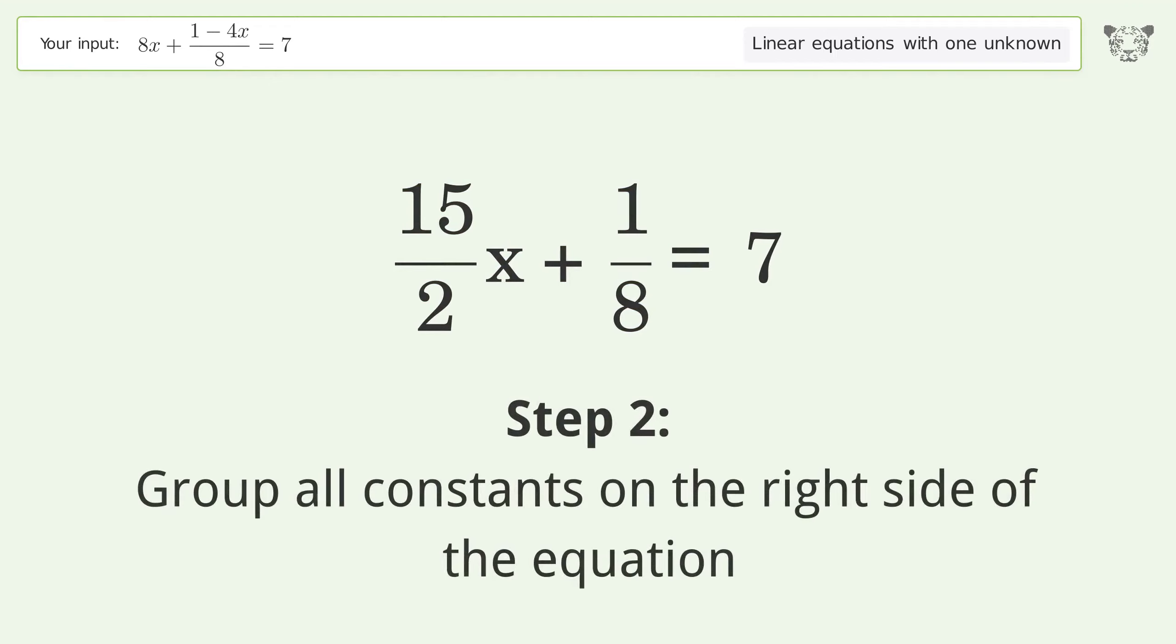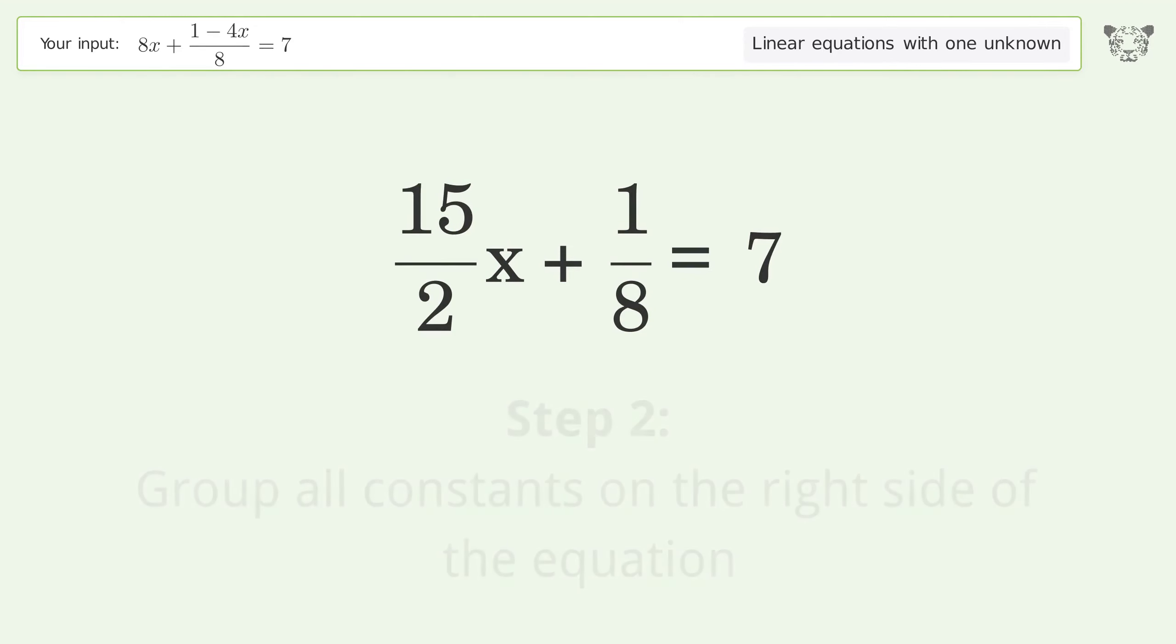Group all constants on the right side of the equation. Subtract 1 over 8 from both sides.